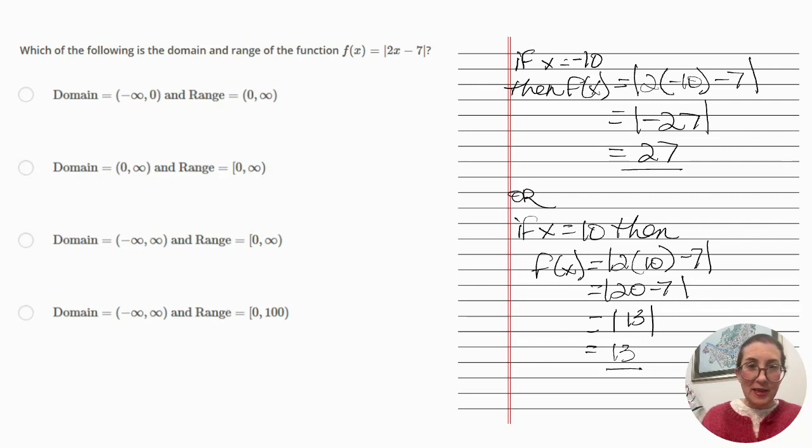Let's get going. The domain is the set of all possible inputs to the function, and the range is the set of all possible outputs of the function. If you look at our function f of x equals the absolute value of 2x minus 7,